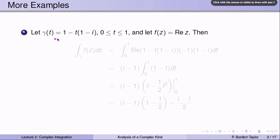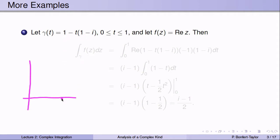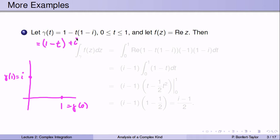Let's look at some more examples. Suppose gamma(t) is given by (1-t)(1-i), where t runs from 0 to 1. When t equals 0, gamma(t) equals 1. When t equals 1, gamma(1) equals 1 minus (1-i), in other words, i. In between, there's a linear relationship between x(t) and y(t). Writing gamma(t) as x(t) plus i·y(t), the real part is 1-t and the imaginary part is t. So we just get the line segment from 1 to i.